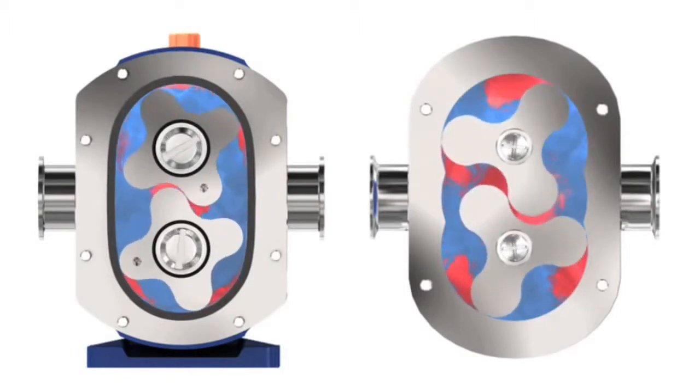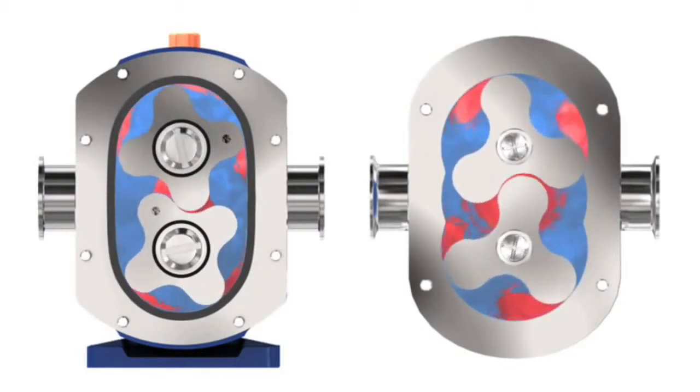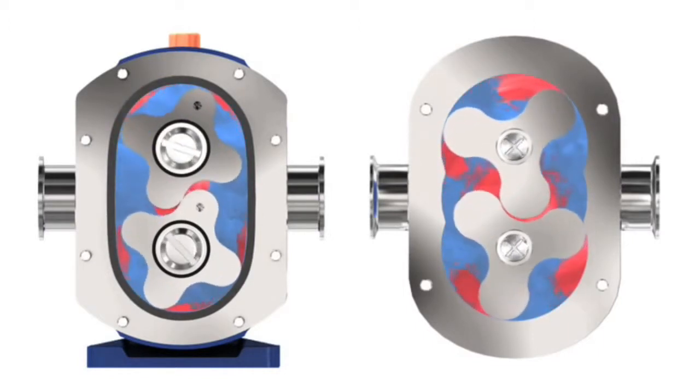The forelobe geometry reduces shear of the liquid as it enters and exits the lobe cavity, and also reduces pulsation. It's perfectly suited for both cleaning in place and sterilization in place.